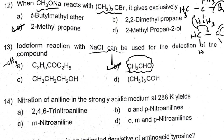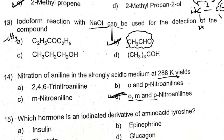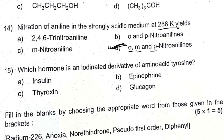Nitration of aniline in strongly acidic medium at 288 K — nitration of aniline in acidic medium forms ortho, meta, and para nitroanilines, giving a mixture of ortho, meta, and para products. In acidic medium, besides ortho and para, the meta product is also formed, so we get the mixture.